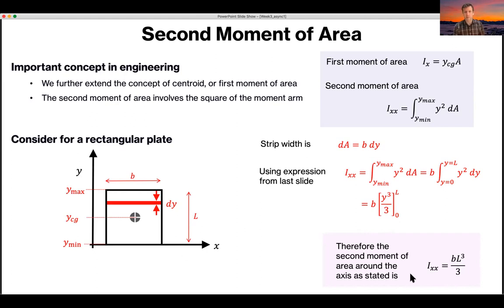Something I haven't put here, which is important to note, is that the units of this quantity is meters to the power of 4. You have the width and you have the length. So the overall quantity is meters to the power of 4.